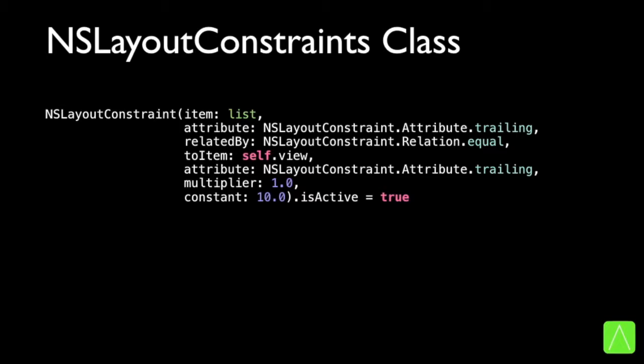Here is an example of a constraint created using the init method. The first argument is the view on which we want to apply the constraint. The second argument is the attribute — in this case, the trailing edge. The third argument is the relationship — in this case, they are equal. The fourth argument is the reference view, for example the superview. The fifth argument is the attribute to target specifically — the trailing edge of the superview. The sixth argument is the multiplier for the expression, and the seventh argument is the constant value. So we are placing a constraint saying that the trailing edge of list must be equal to the trailing edge of the superview with a constant shift of 10 points.